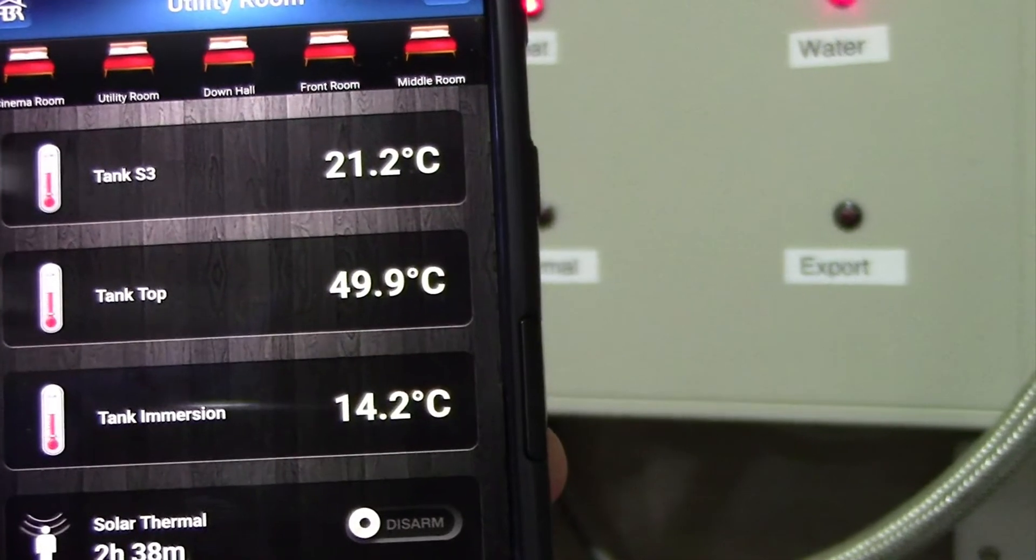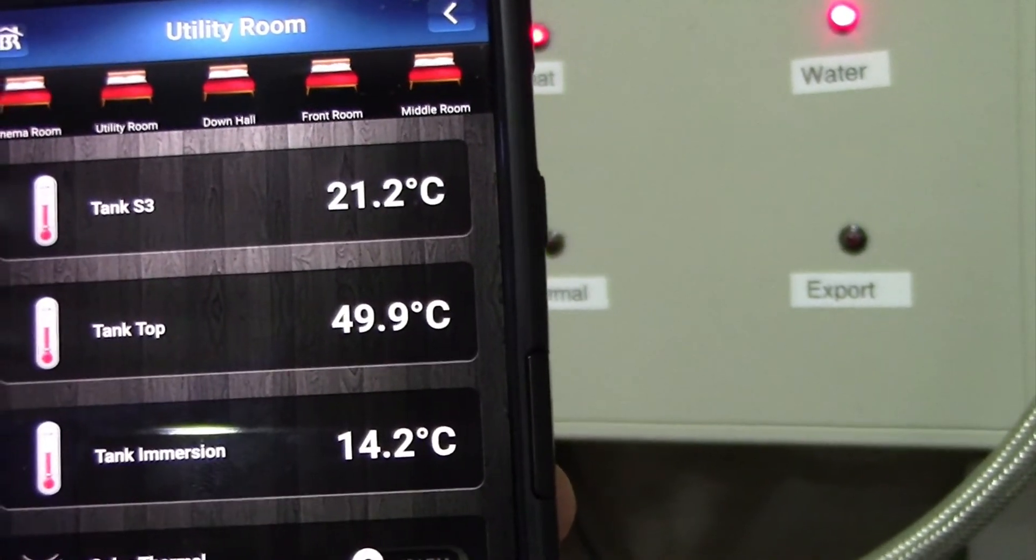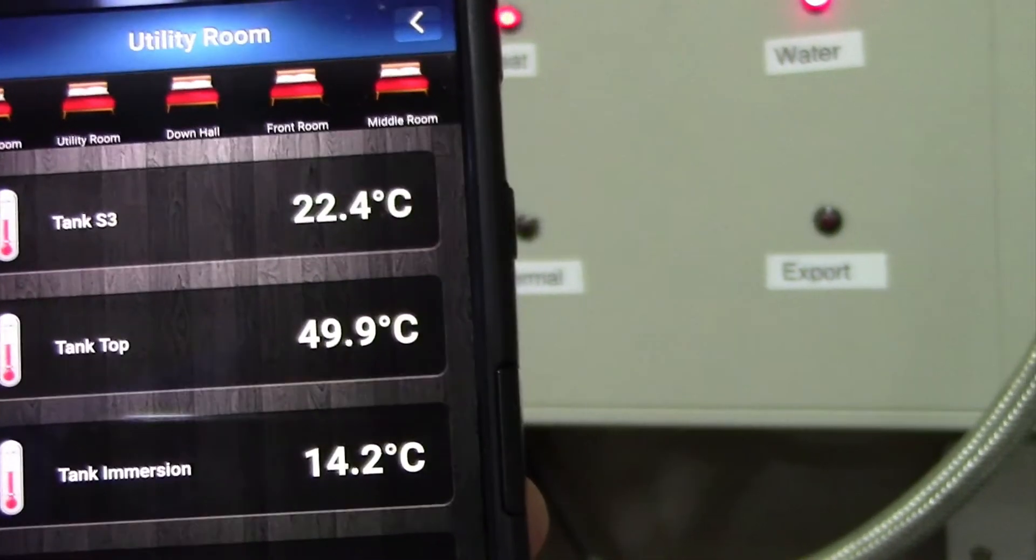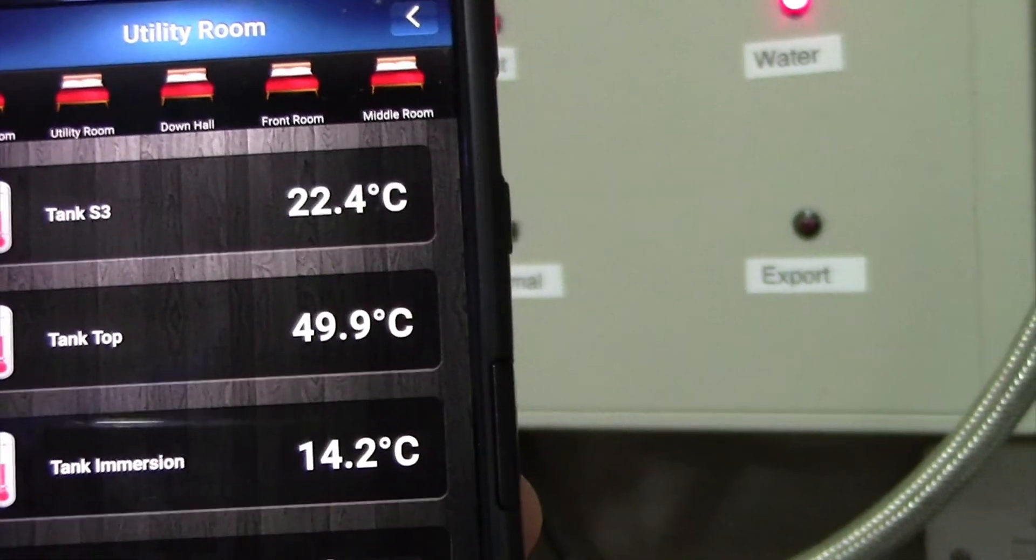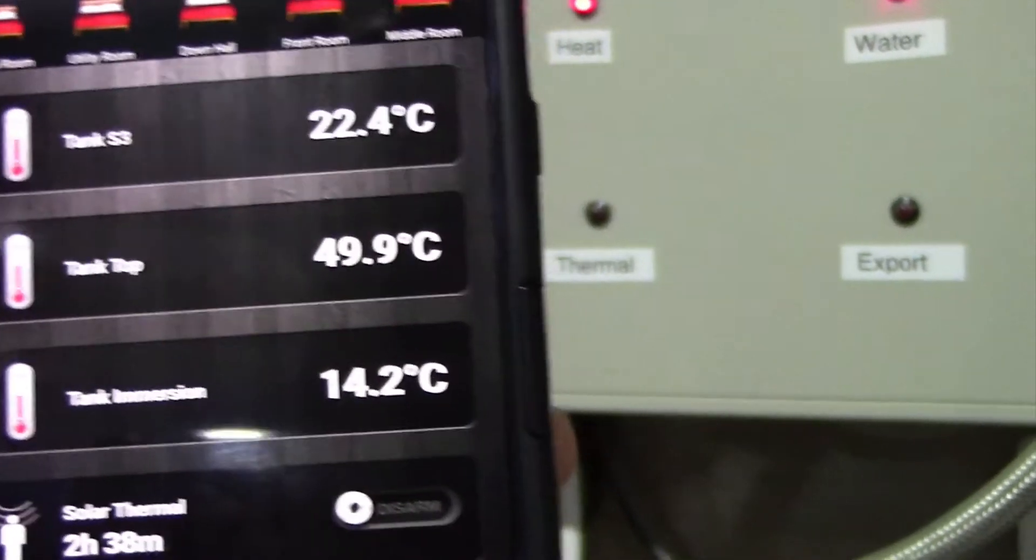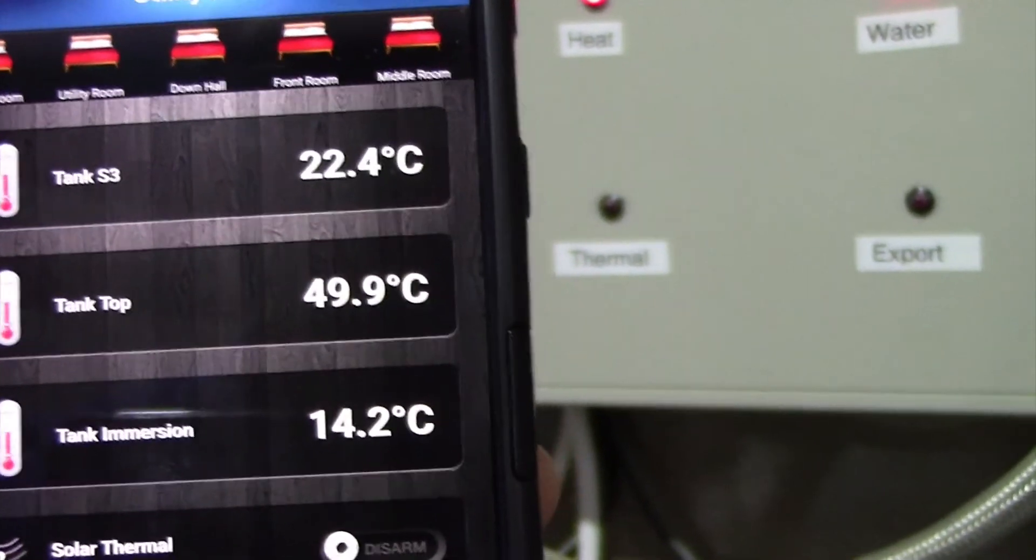It gives the current temperature at those points. At a glance, we can see how hot the water is in the tank and determine if there's enough hot water for a shower, so you don't end up with a cold shower halfway through.